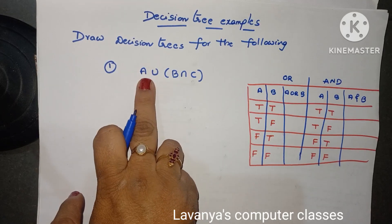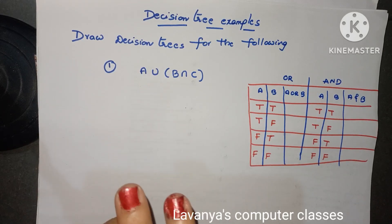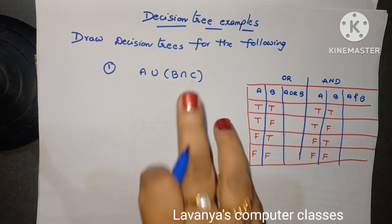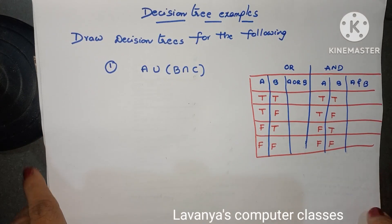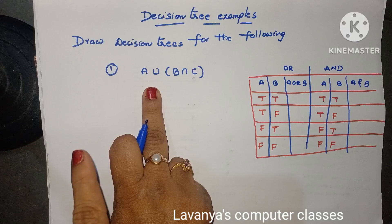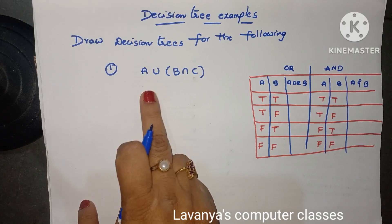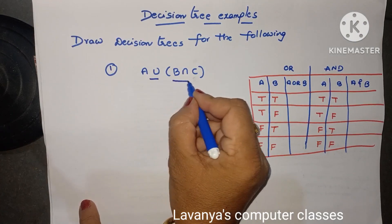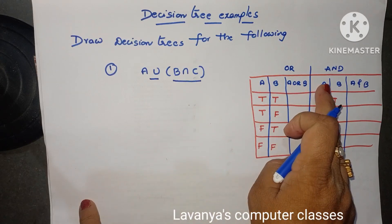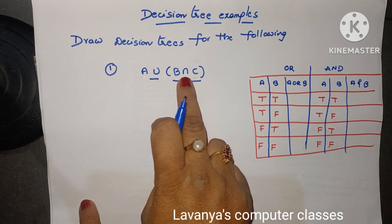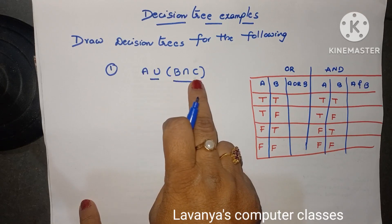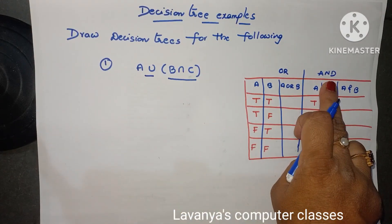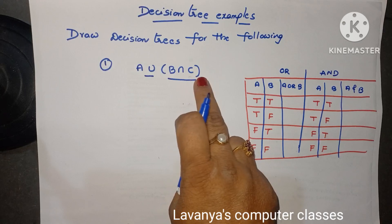Here I want to draw a decision tree for the Boolean function A union B intersection C. Before drawing the decision tree, we thoroughly check what is our Boolean function. A union B intersection C means B and C, then A or B and C. Union is called the OR operator; intersection is called the AND operator. So A OR (B AND C) — B and C is one set because it is kept in brackets.